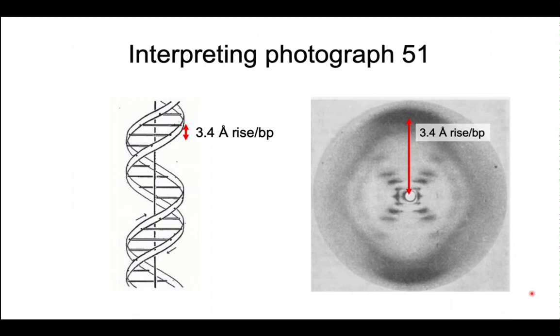The second thing we learned from the photograph comes from the position of this dark spot over here. From the distance from the center to the dark spot, that tells us that the fundamental repeats of the helix are 3.4 angstroms apart. Or for the DNA helix, it's a 3.4 angstrom rise per base pair.